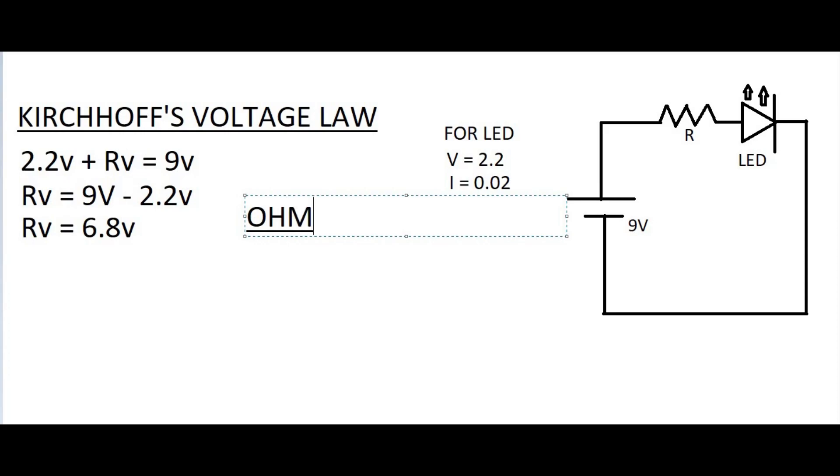Now to get the resistance value, we can simply use Ohm's law. Resistance equal to voltage by current. By applying the voltage and the current value, we get the exact resistance value what we need.